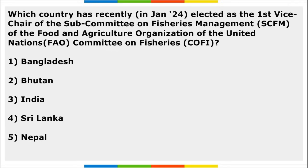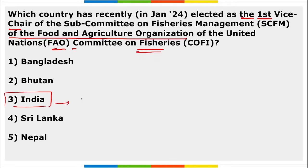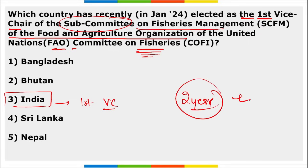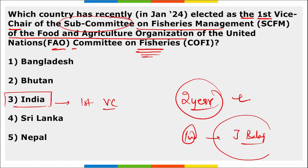India has been elected as the first Vice Chair of the Subcommittee on Fisheries Management (SEM) of the FAO-UN Committee on Fisheries. India has been elected for a term of two years. The Indian delegation was led by J. Balaji.